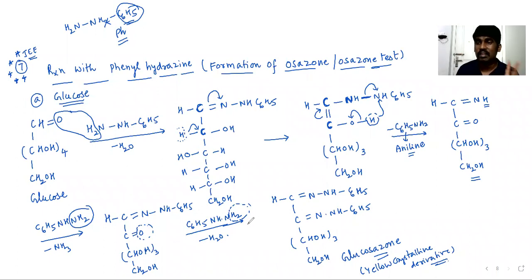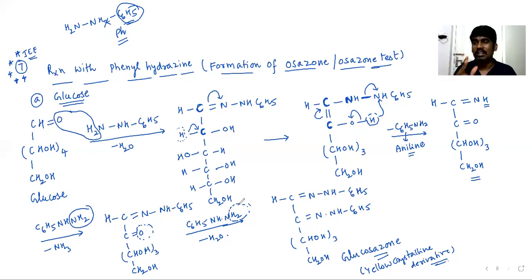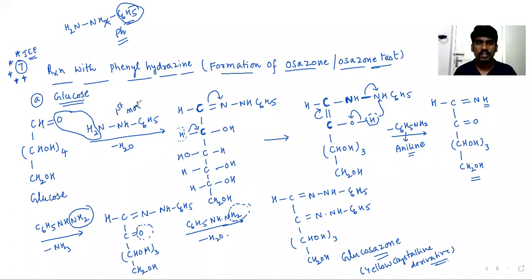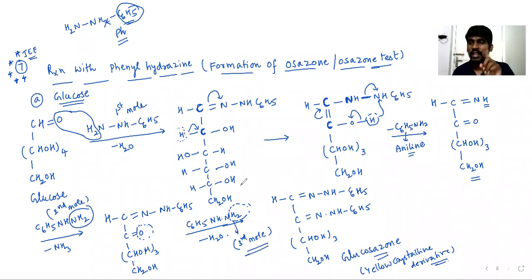Glucose and fructose both react with phenylhydrazine to form osazone. Three moles of phenylhydrazine are used: the first forms the C1 hydrazone, the second reacts at C2 after oxidation, and the third forms the final osazone. The value of X (moles of phenylhydrazine) is 3. This further reaction does not extend beyond C2 because the product is stabilized by intramolecular hydrogen bonding forming a six-membered ring.